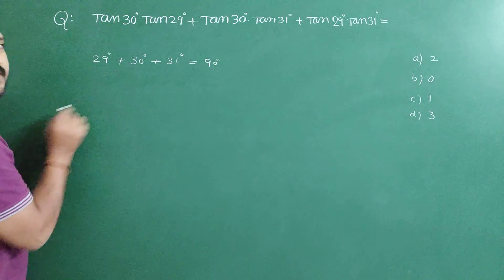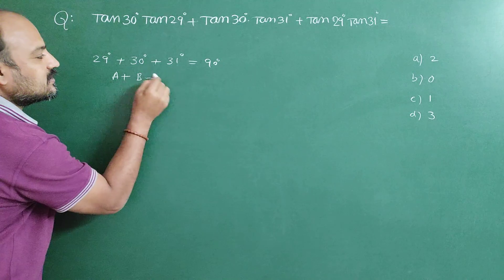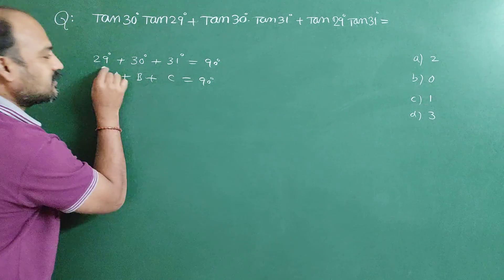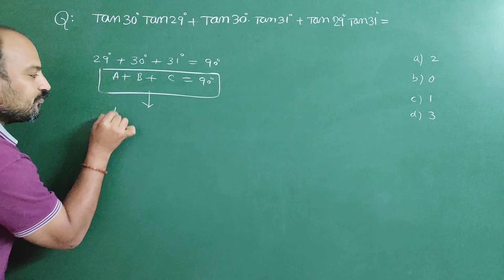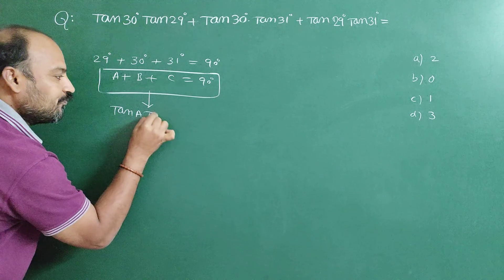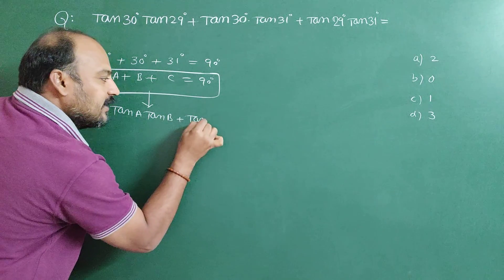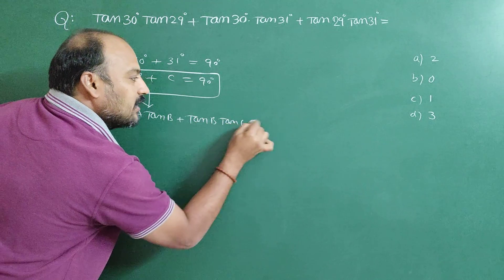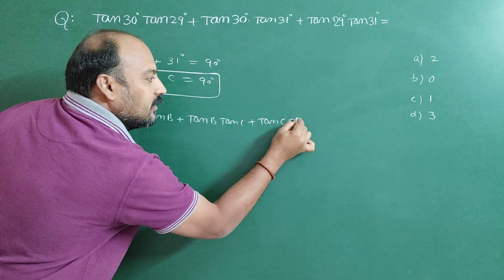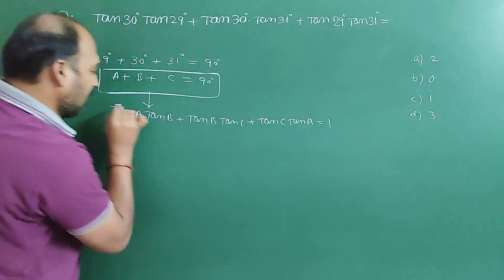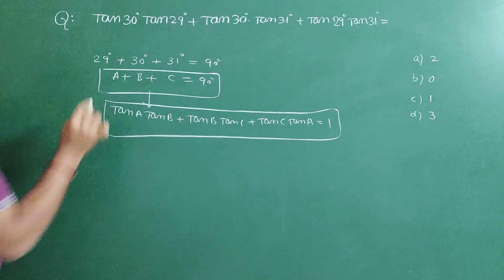That means a plus b plus c is equal to 90 degrees. Then we have tan a tan b plus tan b tan c plus tan c tan a. This result is always 1.